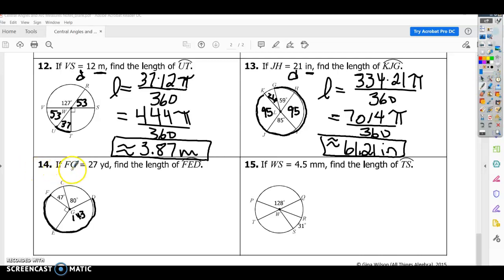For number 14, it says FG. So FG is your center. So this is our radius this time instead of our diameter. And it says find the length of FED. So this means 90. We know the whole thing is 360. So 360 minus 90 minus 47 minus 80. That gives us this measure of 143. So we're going to find the length. So we need to do FED. So we need 143 plus 90. So our measure is going to be 233 times.